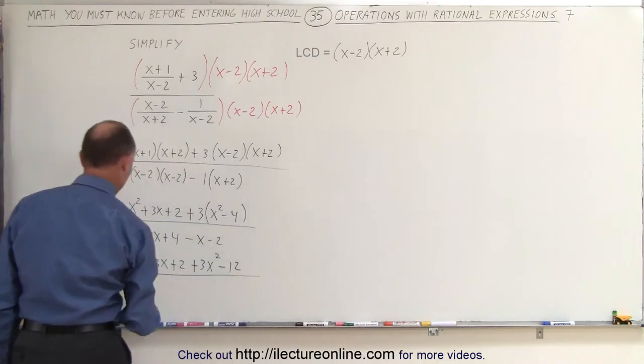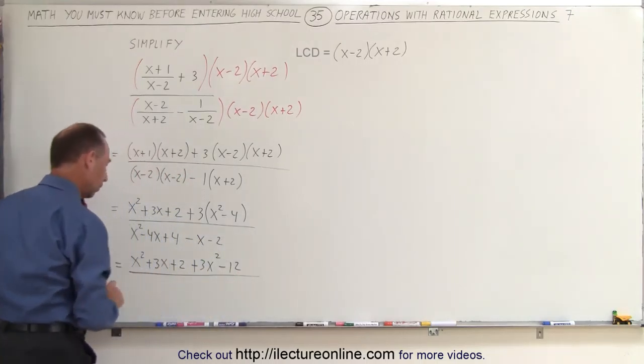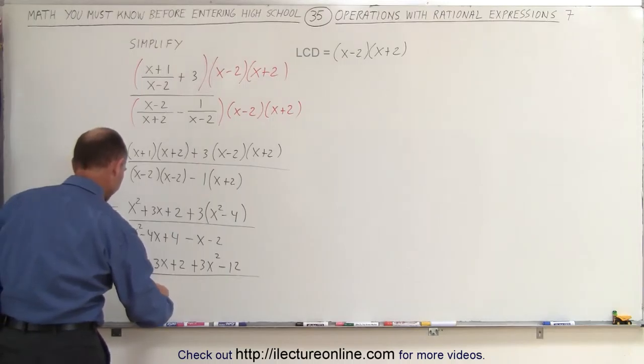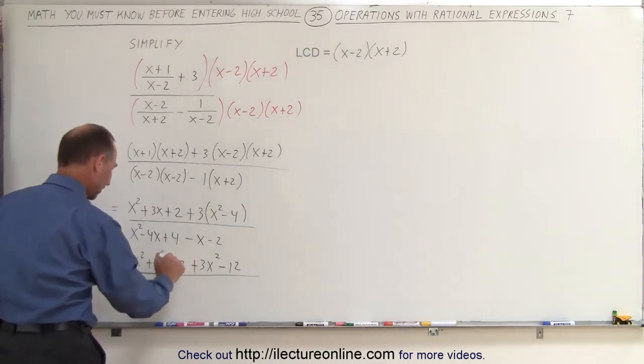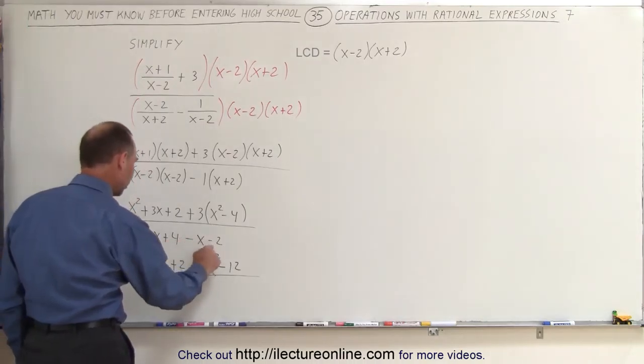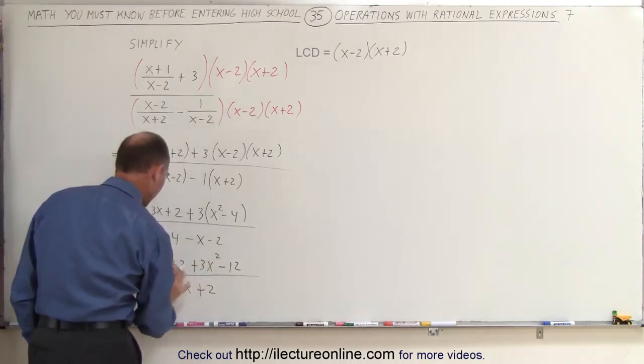The whole thing divided by, let's see here, we can already combine like terms in the denominator. We have an x squared, we have a minus 4x and a minus x, that gives us a minus 5x, and a plus 4 minus 2 gives you a plus 2. So that's the denominator.